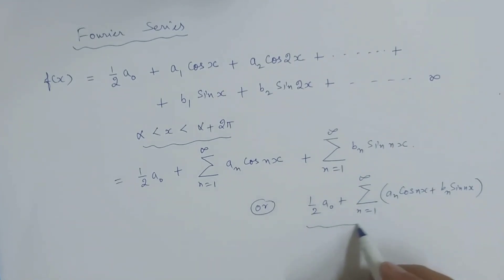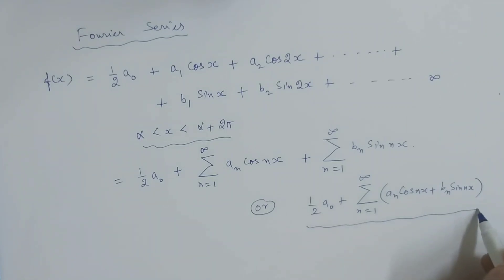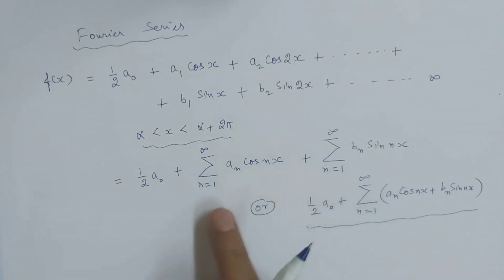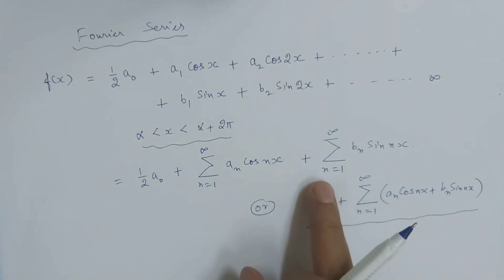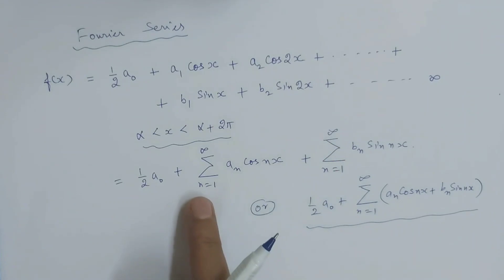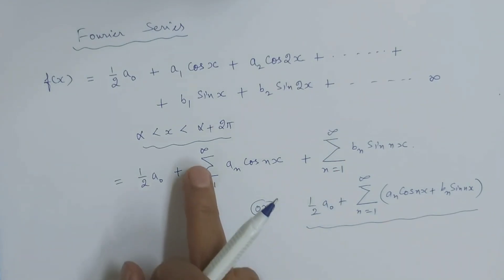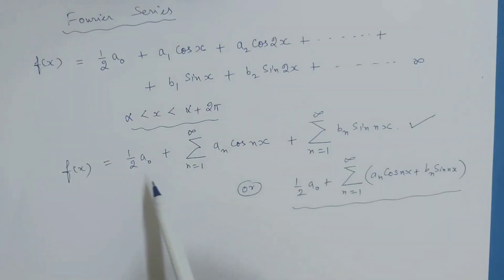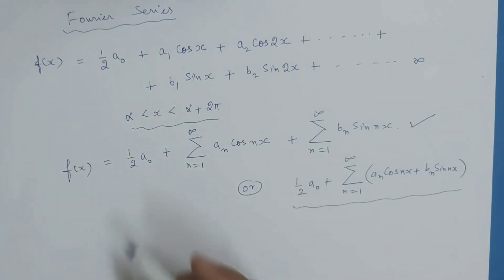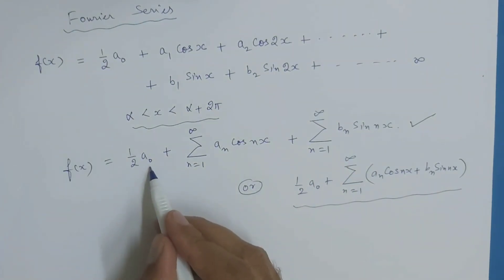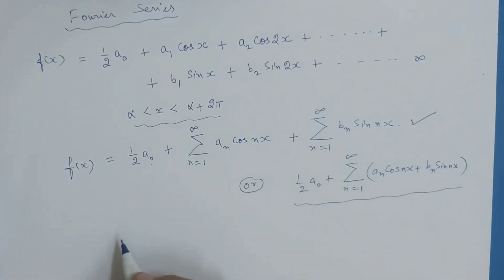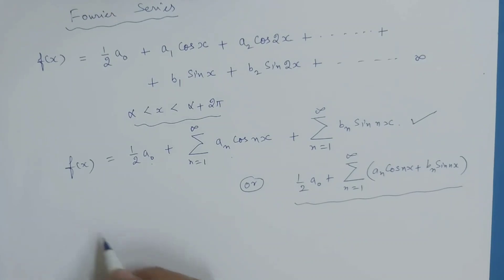इसको इस form में लिख सकते हैं — sigma को बाहर करके, क्योंकि दोनों sigma n=1 to infinity same ही हैं, so it can be written in this combined form, where a_naught, a_n, b_n are Euler's formulae.